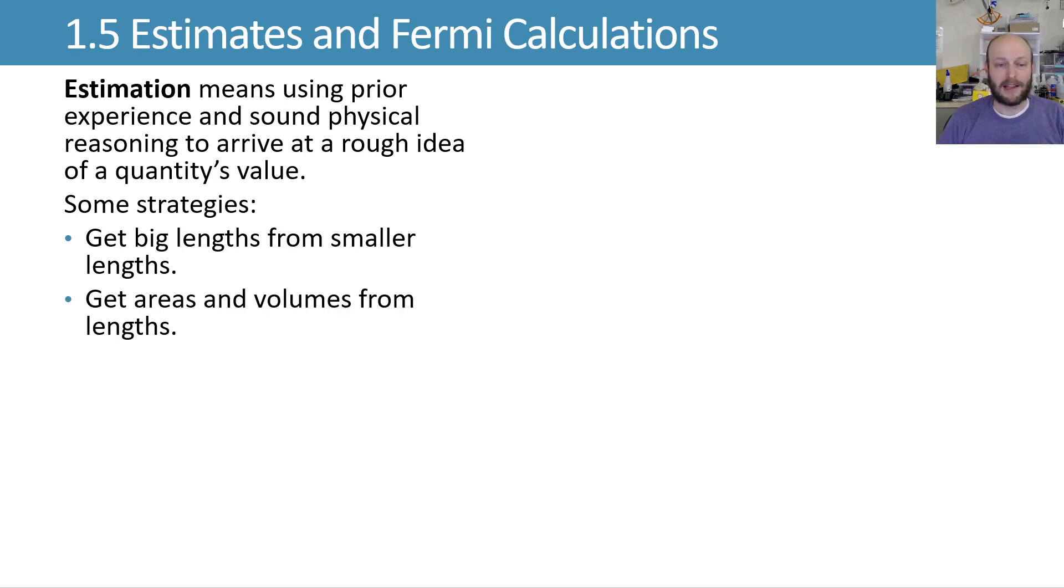You can get areas and volumes from lengths. So if I don't have a good idea for an area, but I want to know how much paint to cover the room with, I can get some lengths, multiply them out, get areas and volumes from that. You can get masses from densities and volumes, using mass equals density times volume.